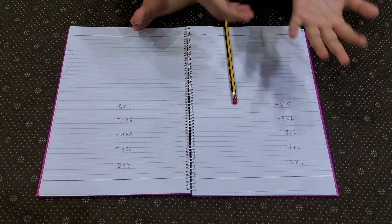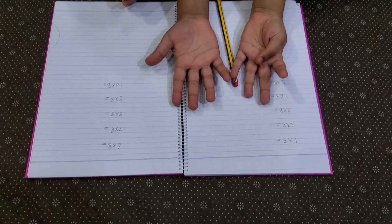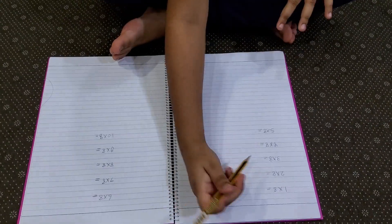So eight multiplied by one. So we bend number one and then number one after it. So it's going to be eight.